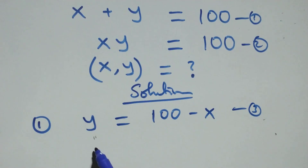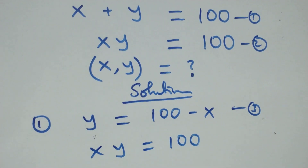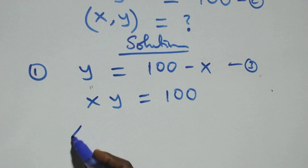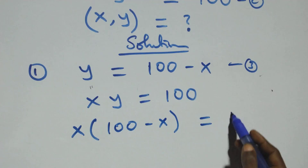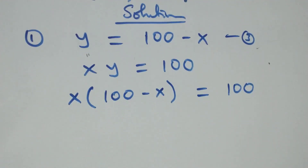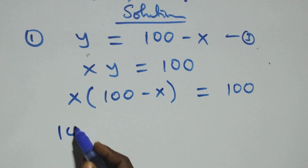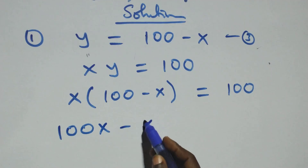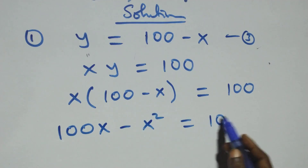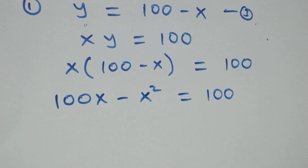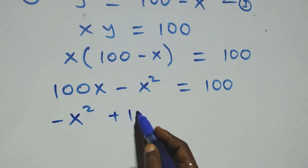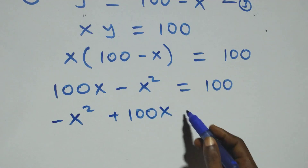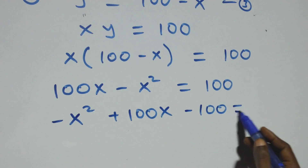From equation two, which is x times y equals to 100, we substitute equation three here, which implies we have x times (100 minus x) equals to 100. Opening the bracket we have 100x minus x squared equals to 100. Rearranging, we have minus x squared plus 100x, and taking 100 to this side becomes minus 100 equals to zero.